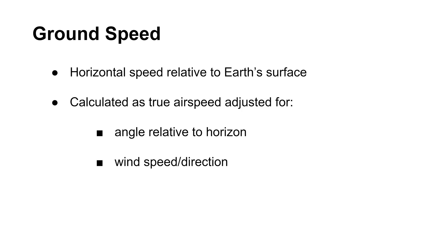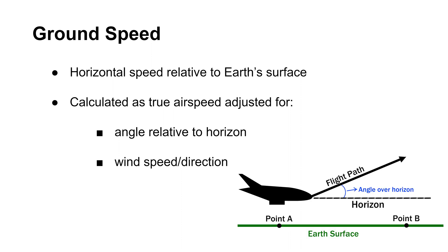The next concept is ground speed, which is the horizontal speed relative to earth surface. This is the most important speed definition since you can use it to calculate the time to fly from point A to point B on the surface. Ground speed is different from true airspeed since ground speed is measured relative to points on earth surface. Ground speed can be different from true airspeed due to an aircraft's flight angle relative to horizon and wind speed direction.